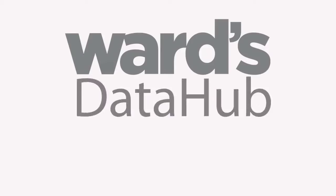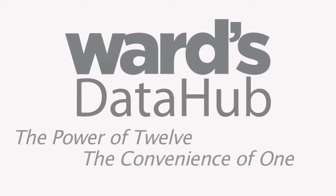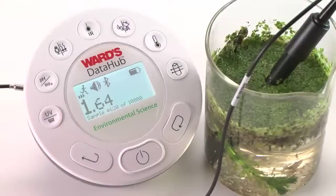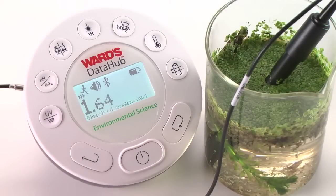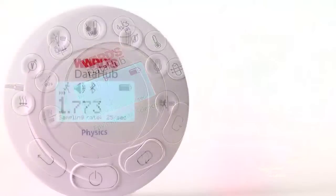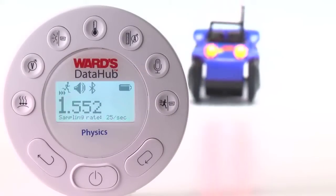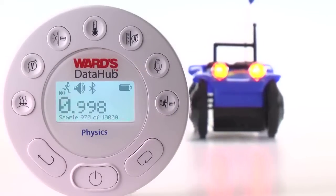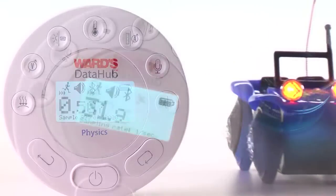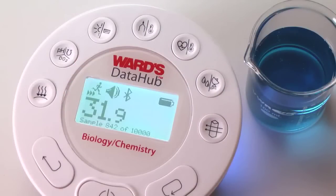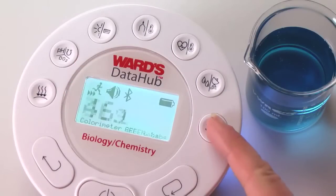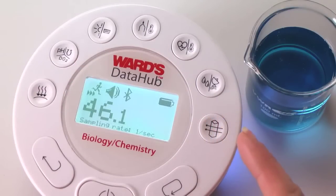Ward's DataHub: the power of 12, the convenience of one. Introducing Ward's DataHub, the only wireless all-in-one probe wear system designed for high school and middle school classrooms. With Ward's DataHub, it's easier than ever to incorporate probe wear into the hands-on science lessons you already teach. The result is faster, more powerful data analysis with every lesson.